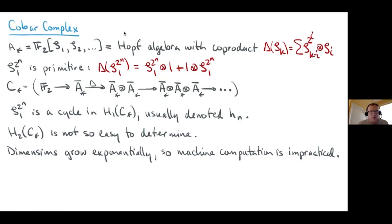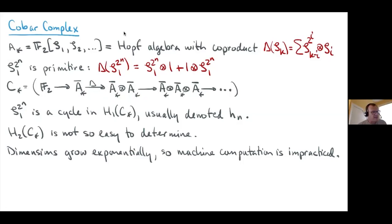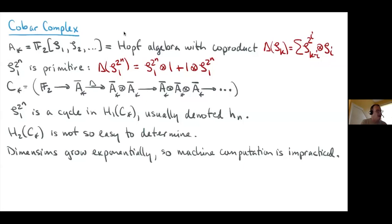To find h_2, you look at cycles modulo boundaries in the appropriate degree, but that turns out to be not easy to determine by hand — it's a tremendous amount of work. One problem with the cobar complex is that dimensions grow exponentially because you're taking tensor powers. The cobar complex has great formal properties but gets very hard to compute in higher degrees. There are smaller minimal resolutions you can work with; the cobar complex is not one of them.